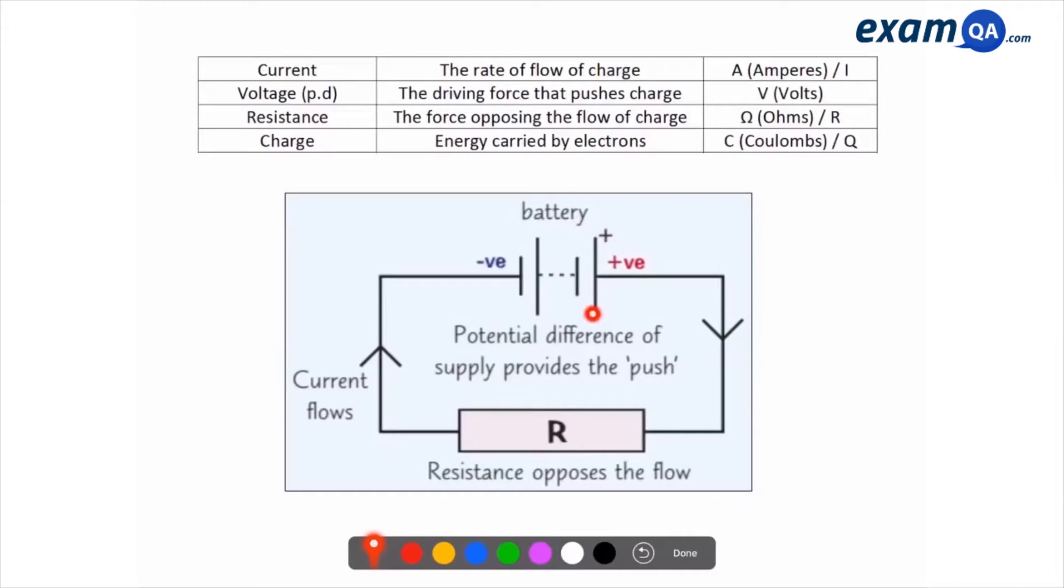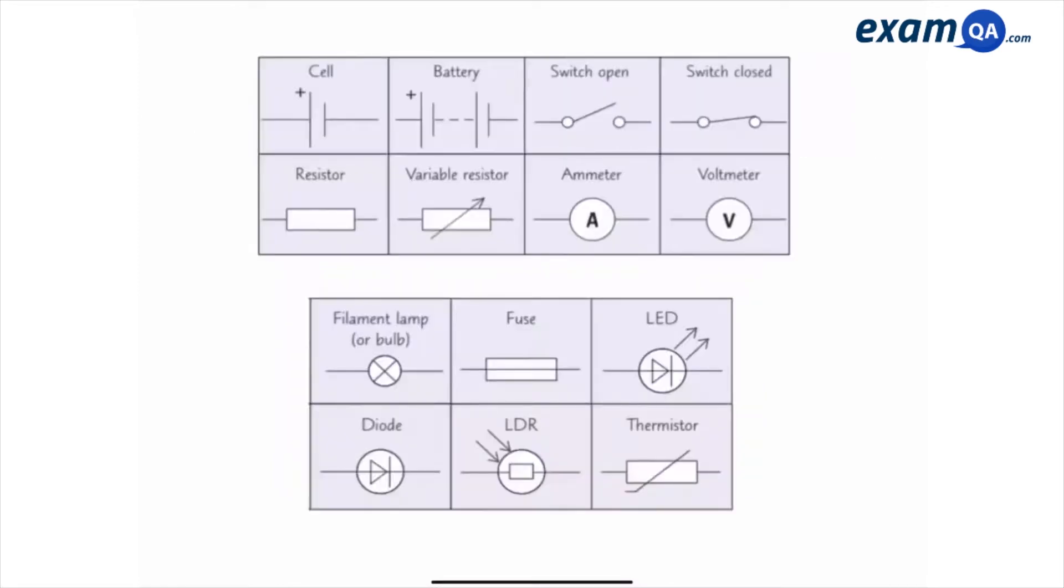Also, the longer side of the cell is positively charged. So electrons always go this way. The charge travels in this direction, or sorry, the current flows in this direction. This is known as a component. Now, there are many different types of components that you can have in a circuit. There's about 12 of them that you need to know.